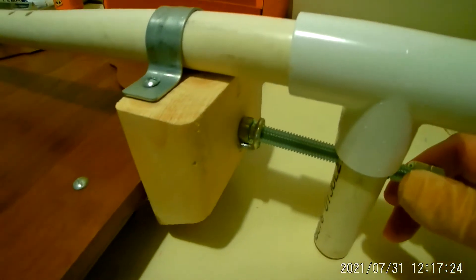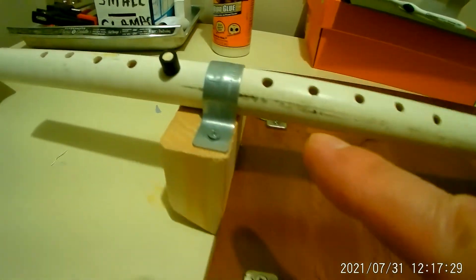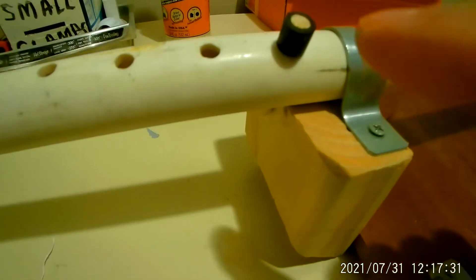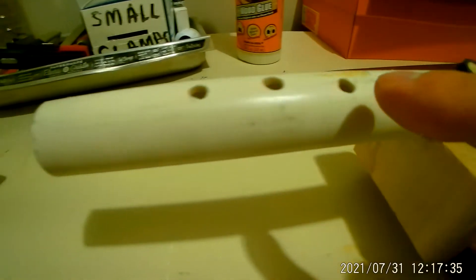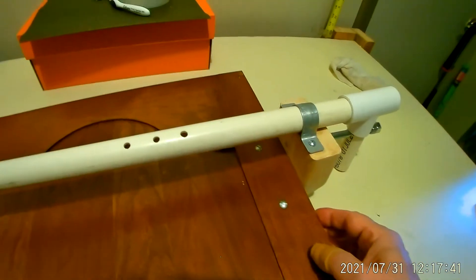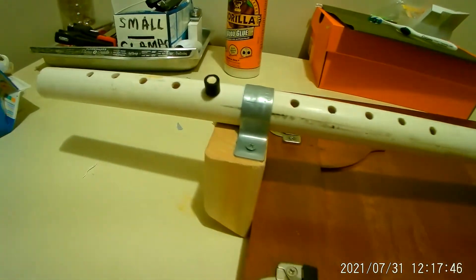When you tighten this, this will move forward. This is stationary because it is held by these dowels, and of course these are adjustable. So we get a functional pipe clamp just made out of some of these simple components.